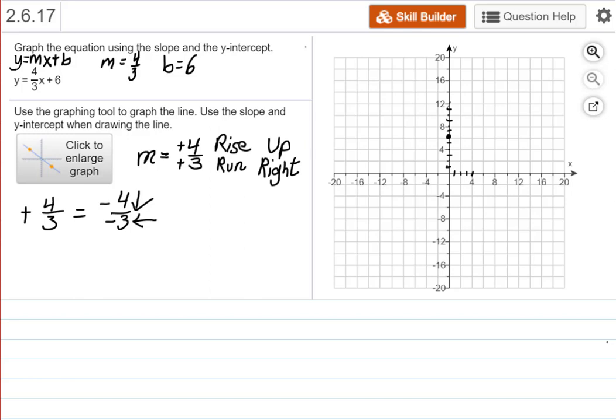So now, let's use this to start at 6 and go up 4. 1, 2, 3, 4, and to the right 3. 1, 2, 3. That's our next point.